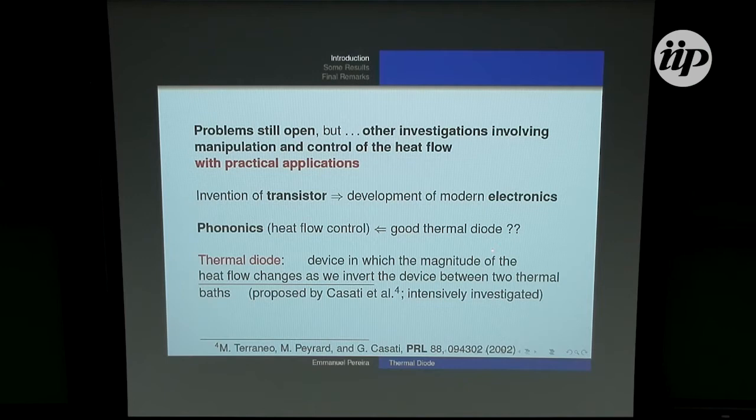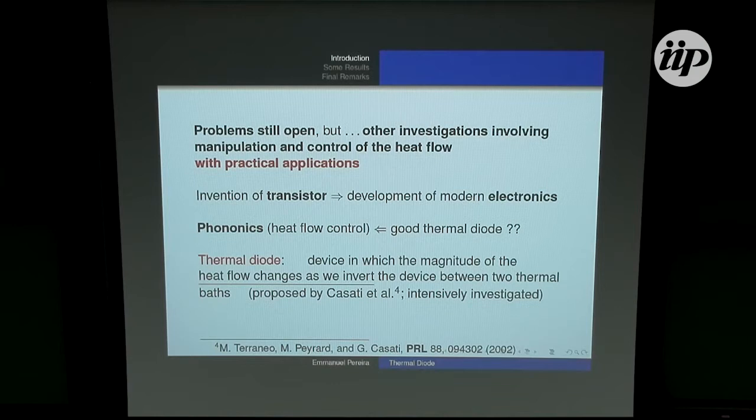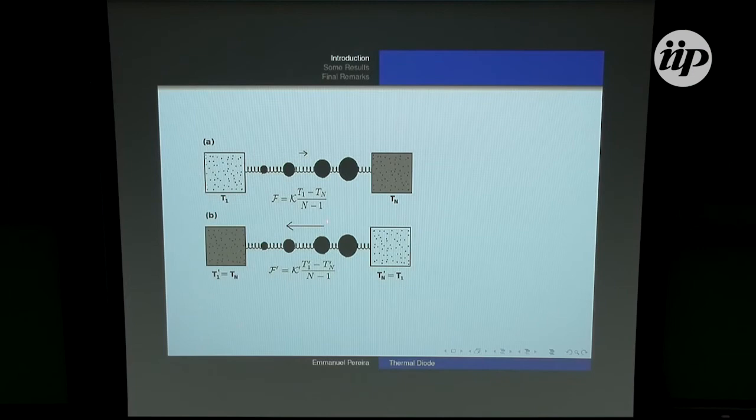The thermal diode has been proposed by Casate almost 15 years ago. If you put an asymmetric model between two thermal baths — the hot bath and the cold bath — we see heat flow from hot to cold. When we invert the baths, the direction of the heat flow inverts. If the magnitude also changes, then we have thermal rectification.